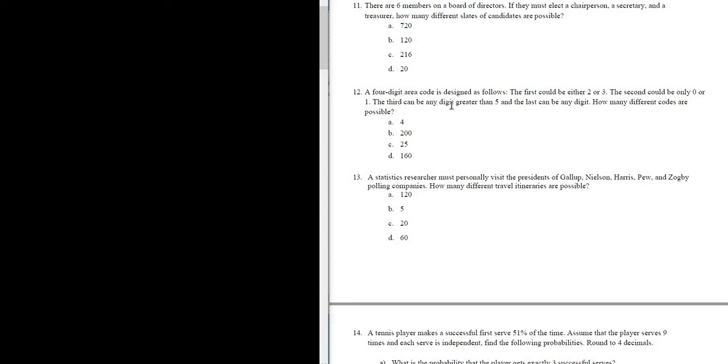Problem number 12. A four-digit area code is designed as follows. The first digit could be 2 or 3, the second can be 0 or 1, and the third any digit greater than 5, and the last can be any digit. How many different codes are possible?